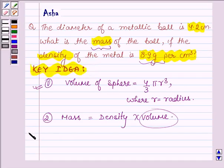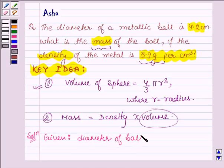Let's now begin with the solution. Now here we are given the diameter of the metallic ball is equal to 4.2 cm. Therefore,